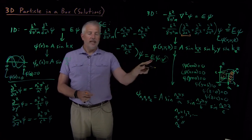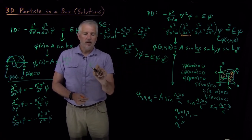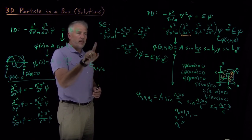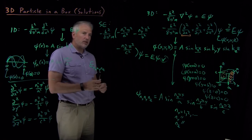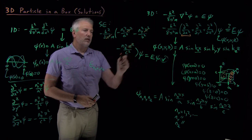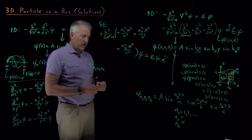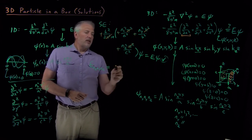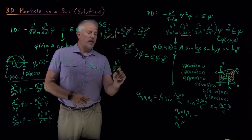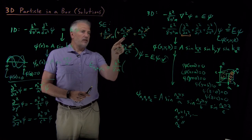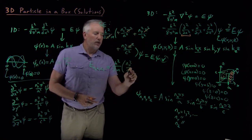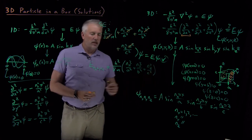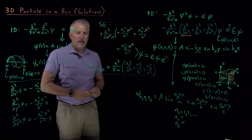This also lets us evaluate the energy of a three-dimensional particle in a box. The π² terms and negative signs cancel, giving the energy as E = h²/(8m) × (n_x²/a² + n_y²/b² + n_z²/c²). That is the general result for a three-dimensional particle in a box with arbitrary box dimensions a, b, and c.